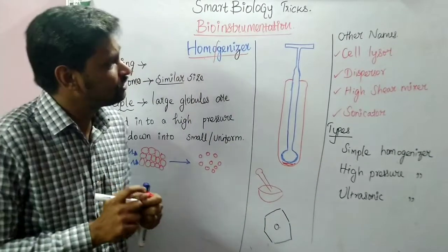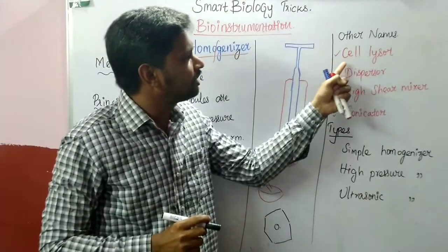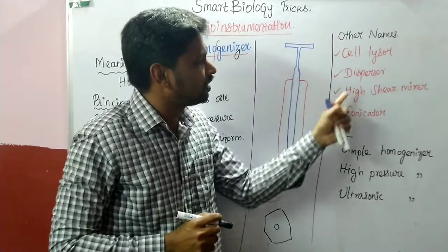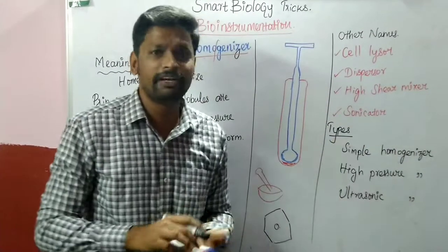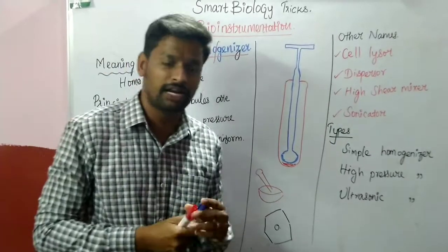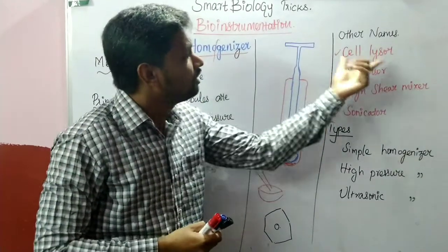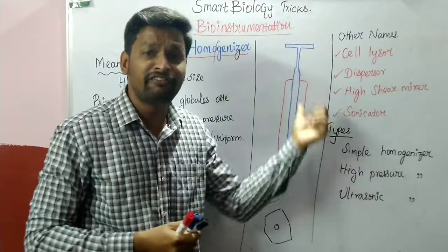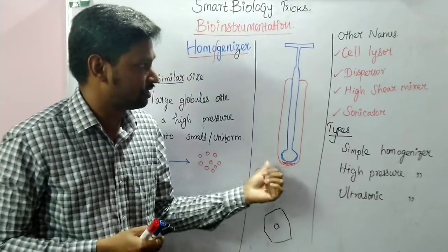This homogenizer is also known by different names such as cell lyser, disperser, high shear mixer, and sonicator. All these names are given to advanced versions of the homogenizer.